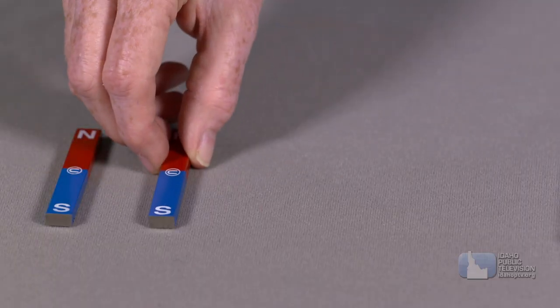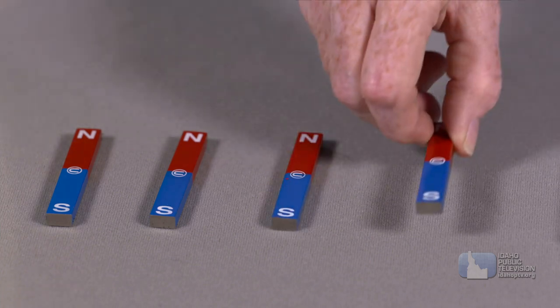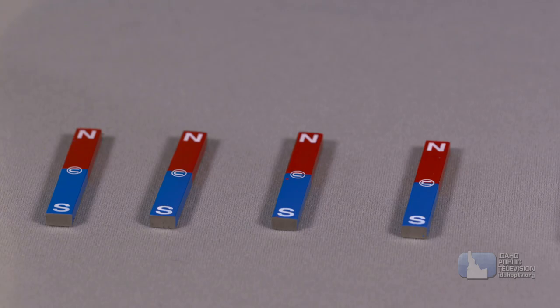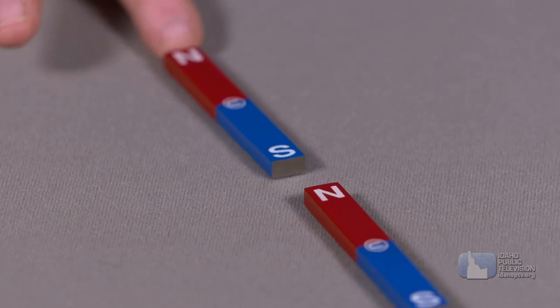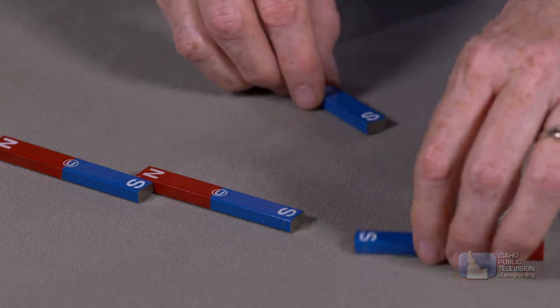Each end of a magnet is called a pole, either the north pole or the south pole. Now, magnets are useful because these poles can attract or repel other magnets and some metals. That's because opposite poles attract or are drawn together, and like poles repel or push apart.